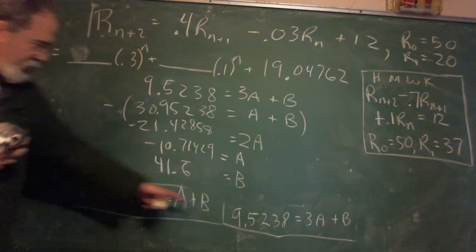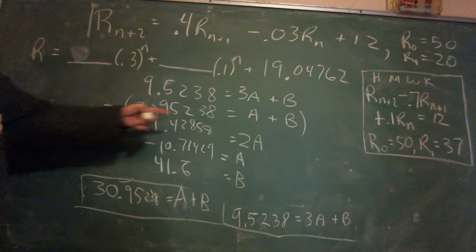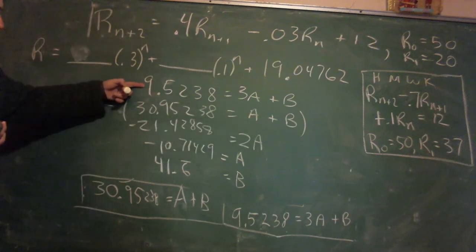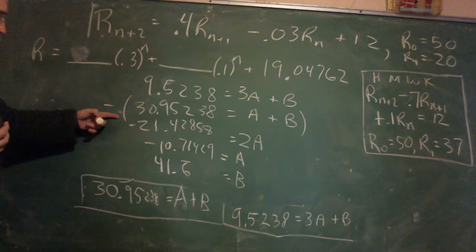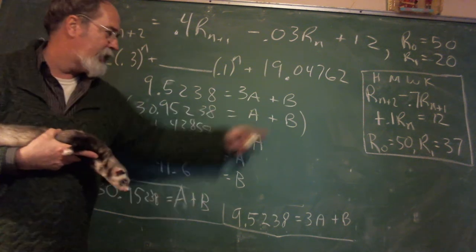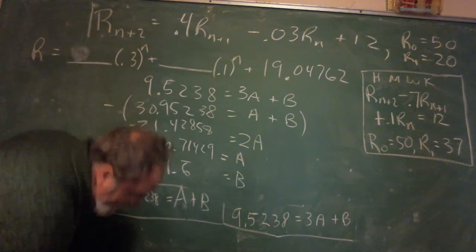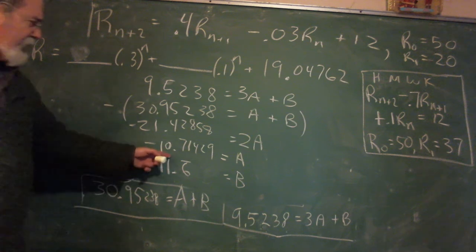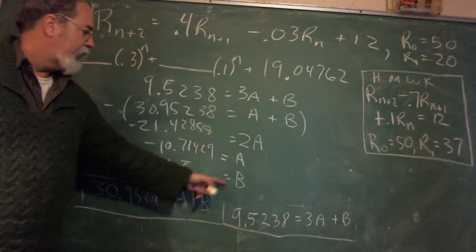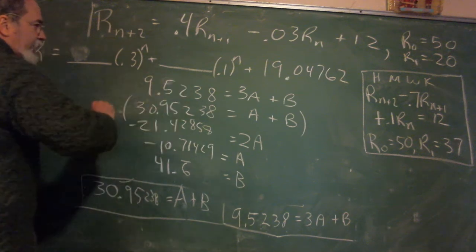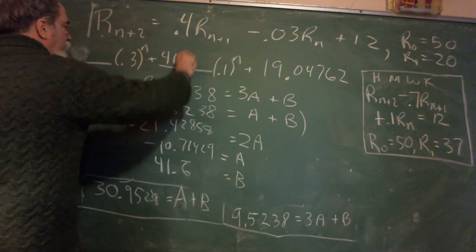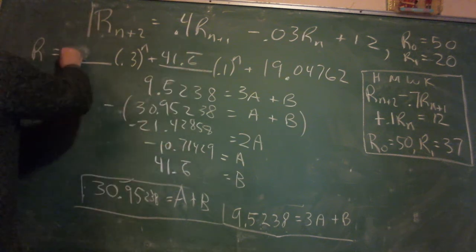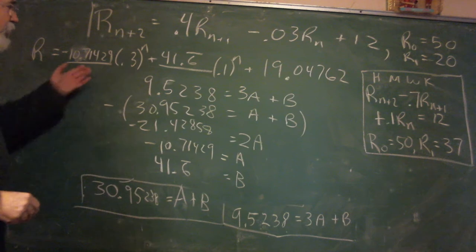All right, so working upwards from here, trying to solve this system. What I did was I subtracted to cancel the Bs. So I have the 0.95 equals 3A plus B, and I'm subtracting the 30.95 equals the A plus B. So the Bs cancel. I have 2A equals this stuff, and I get this negative 10.71 for A, and that forces B to be 41.6 bar. So putting this in for A in either of these equations here, I get this number for B. So the B was on the 0.1. So this is 41.6 bar, and the negative 10.71429. There's our specific solution.